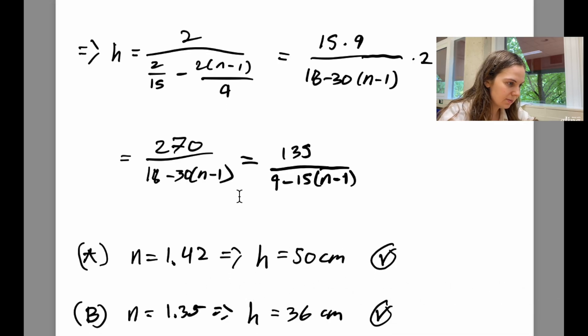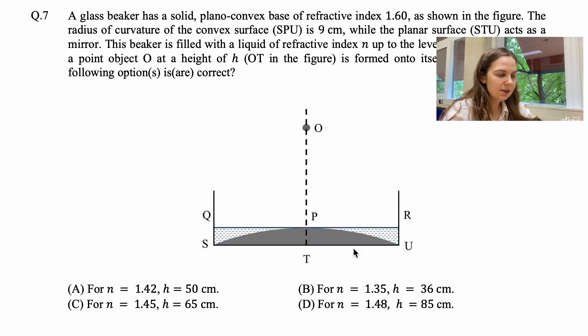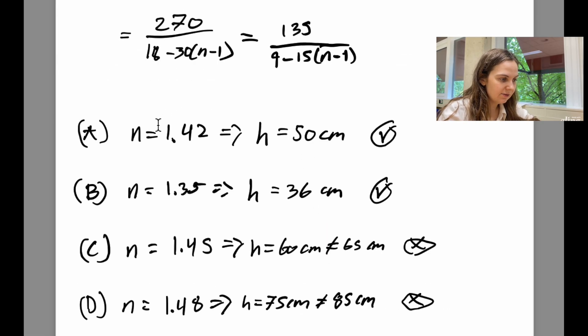So if we go back to the problem, we see that we are given four options with four different values for this refractive index N. So in option A, if we plug in the value of N, which is 1.42, into this formula, we get that h is 50 centimeters, which is also what is given in option A. So we know that A is correct. And if we look at option B, we get that N is 1.35, which means that h is just 36 centimeters, which is also the value given in option B. So we know that B is correct.